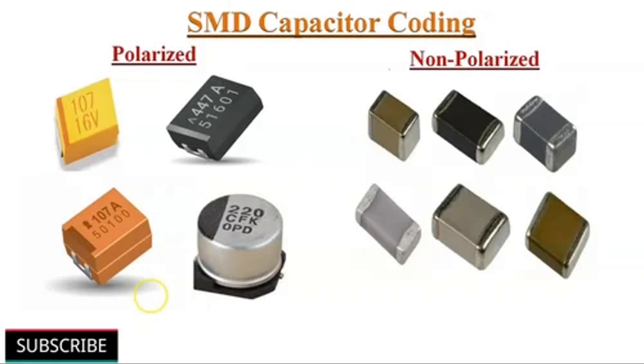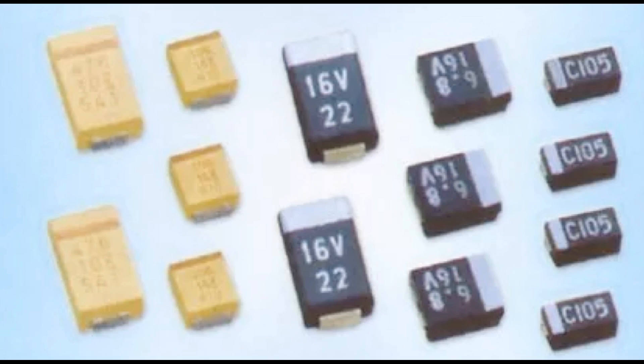Smoothing power supply rails: Large electrolytic capacitors are commonly used in power supply circuits. They are connected in parallel to the output terminals of the power supply. These capacitors store charge when the voltage is high and release it when the voltage drops, effectively smoothing out variations and providing a more stable voltage to the connected devices.